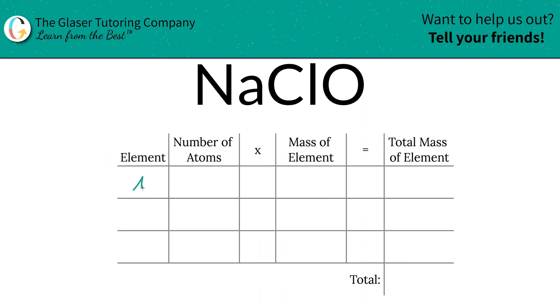So the first thing is we're going to write the elements we see. We've got sodium, chlorine, and oxygen. Next is to identify the number of atoms and that's where the subscripts come into play. Now if you don't see anything down there, just put a one in there because that's what it is assumed to be. So we've got one atom of each.